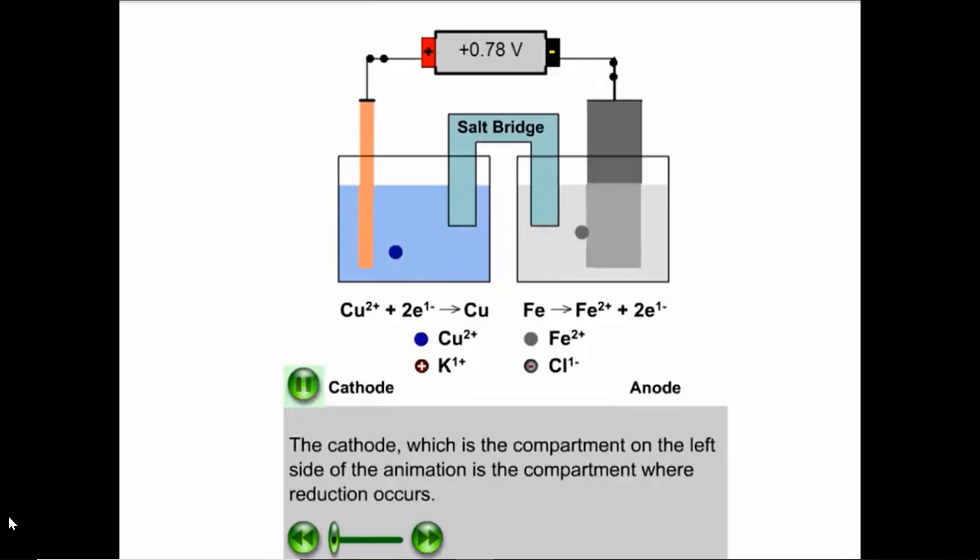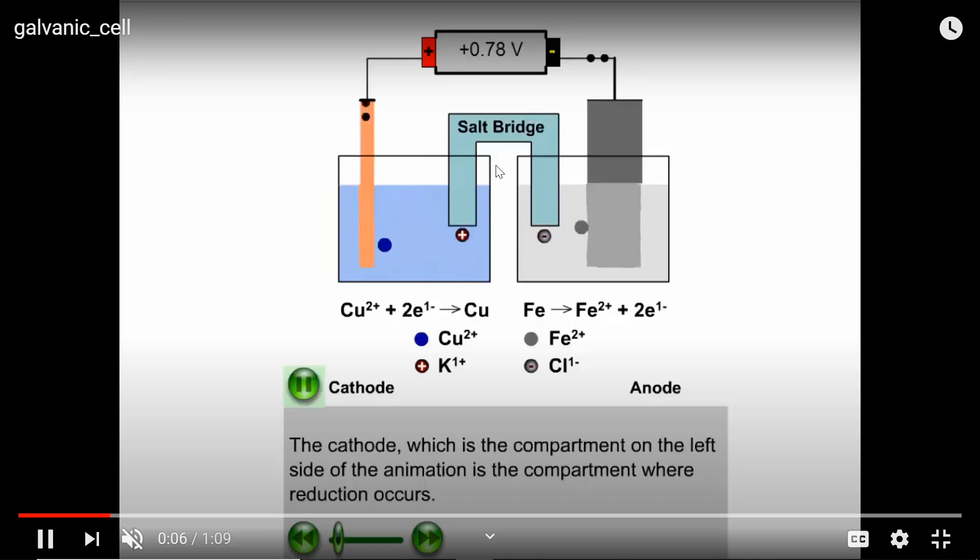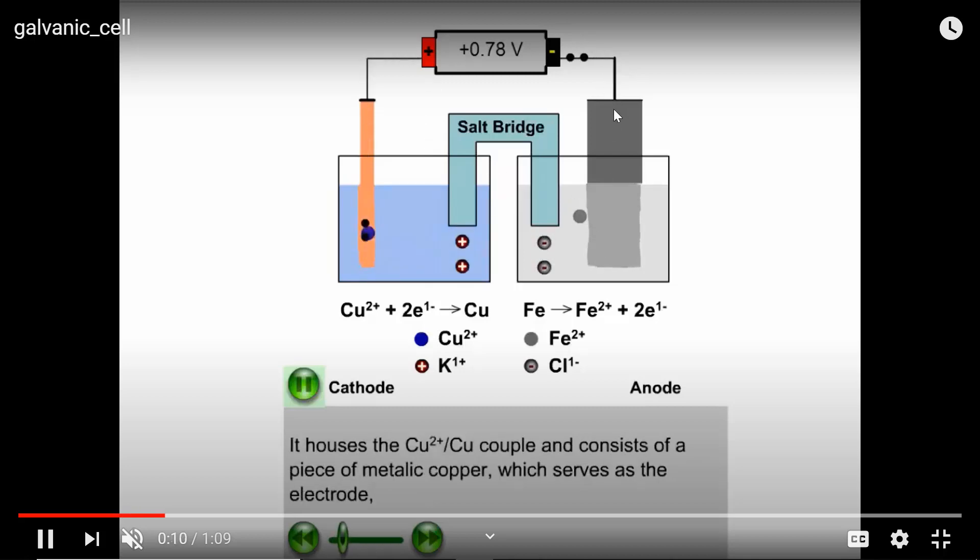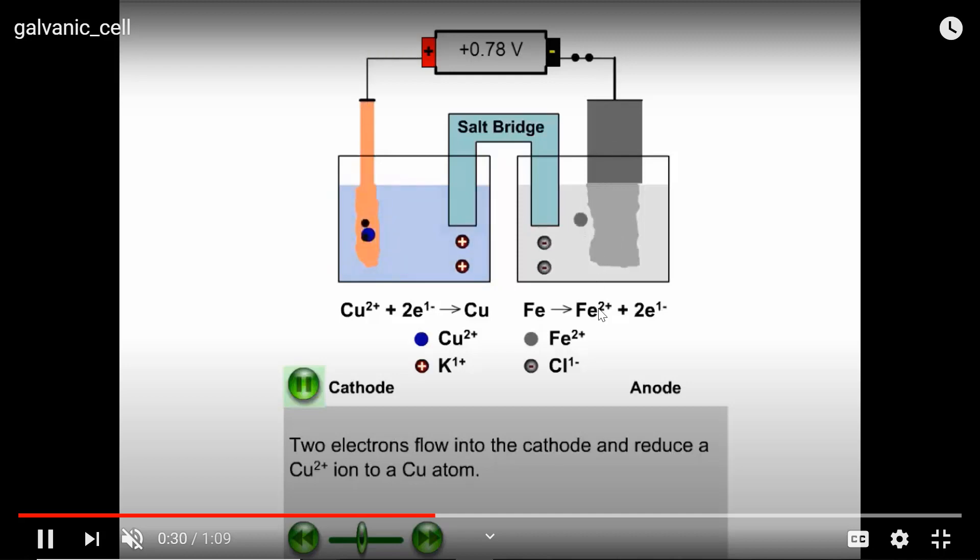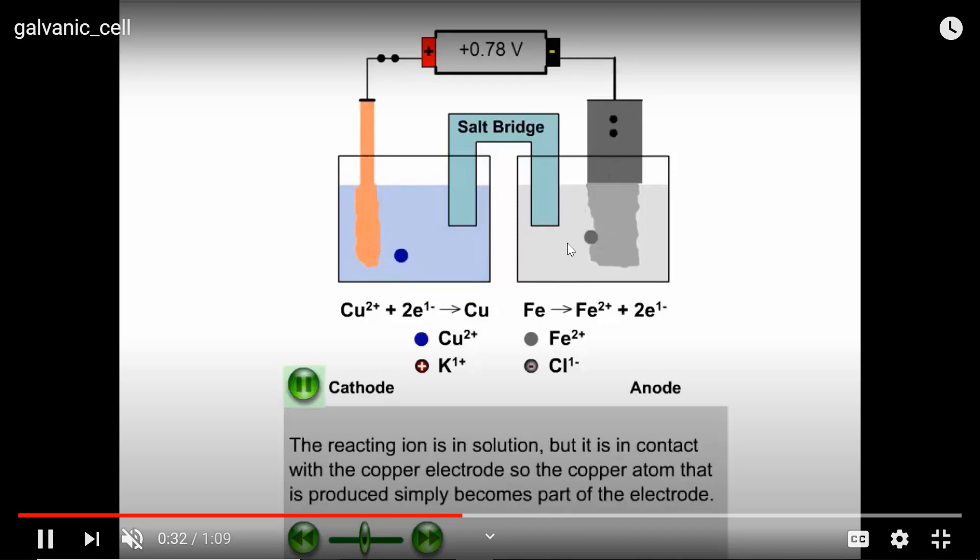I wanted to point out a few things while this reaction is running. Notice how the electrons are going downhill from the iron metal into the solution that has copper 2+. Also notice how this electrode appears to be getting smaller as the reaction occurs. That's because we're going from solid iron, which is this gray bar, to iron 2+, which is in solution.